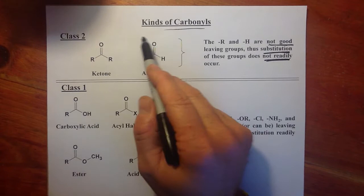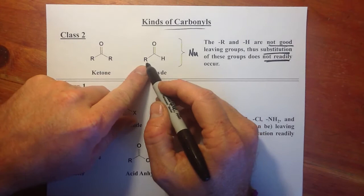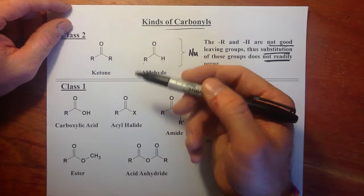Class two carbonyls often give us addition products. If a nucleophile comes in and attacks the carbonyl carbon — whether we have R and H or R and R — we tend to get addition products, not substitution, because these are not good leaving groups.